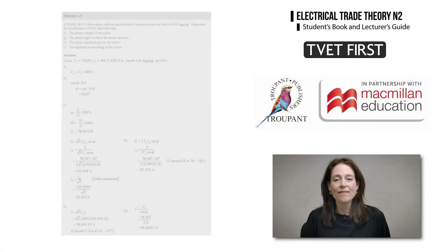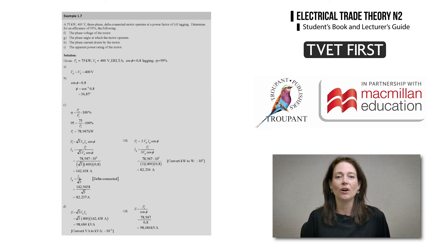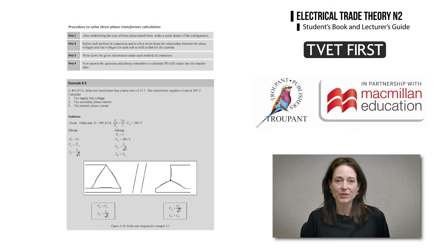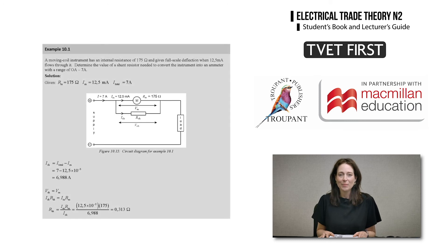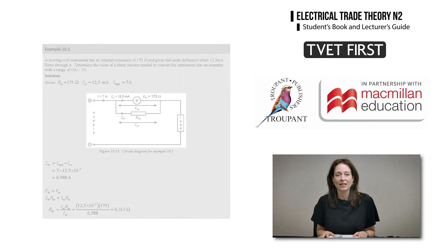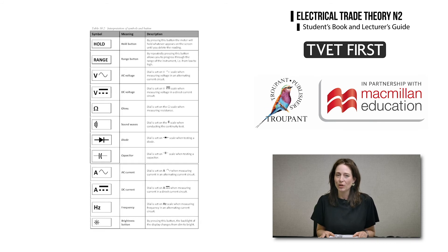The author of TVET First Electrical Trade Theory is the well-known Sunil Chattagun. He is an experienced lecturer and national examiner and has designed worked examples to assist students with potential stumbling blocks. Have a look at the worked examples on three-phase loads and the step-by-step procedure for solving three-phase transformer problems. Examples have been chosen carefully to demonstrate the use of measuring instruments, such as how to extend the range of a galvanometer, as well as the symbols shown on the screen of a typical digital multimeter for the different functions.